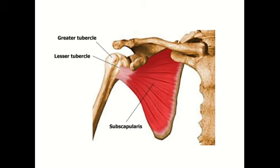This is an anterior view of the scapular region. The subscapularis muscle arises from the subscapular fossa of the scapula and is inserted to the lesser tubercle. The teres major muscle is inserted to the medial lip of the bicipital groove. Pectoralis major is inserted to the lateral lip of the bicipital groove, and the latissimus dorsi is inserted to the bicipital groove, or intertubercular groove, itself.